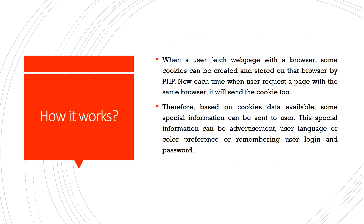Then there are reminders. How cookies work: when a user fetches a webpage within a browser, some cookies can be created and stored on that browser by PHP. Now each time the user requests a page with the same browser, it will send the cookie. Therefore, based on cookie data available, some information can be sent to the user. This information can be an advertisement, user language or color preference, or a remembered login and password. When you go to some website, in the right or left hand corner you will see advertisements — all of these are cookie information.